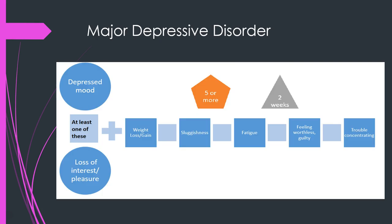Major depressive disorder is perhaps one of the most commonly diagnosed disorders in the DSM and one social workers frequently address. You need at least one of either depressed mood or loss of interest or pleasure, plus at least five or more other symptoms including weight loss or gain, sluggishness, fatigue, trouble concentrating, sleeping too much or too little, and feelings of worthlessness or guilt — all occurring for at least two weeks. Common diagnostic tools include the PHQ-9 (Patient Health Questionnaire 9) and the Beck Depression Inventory.